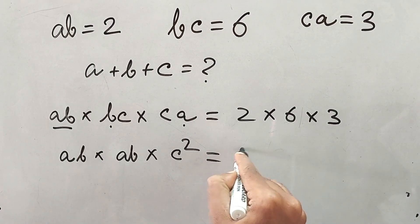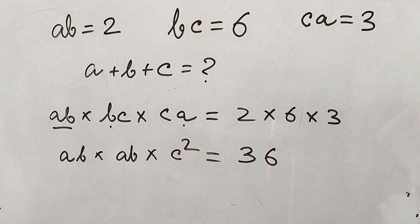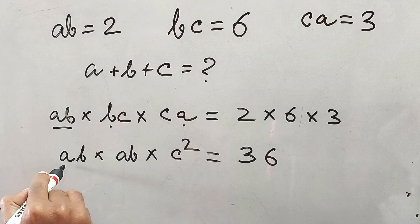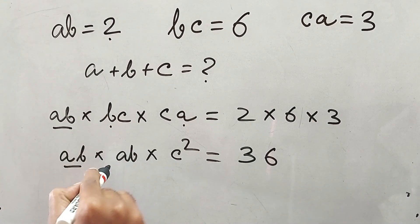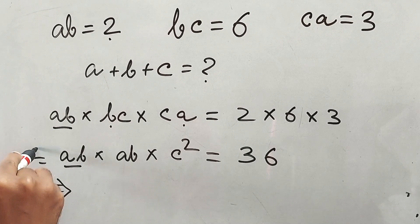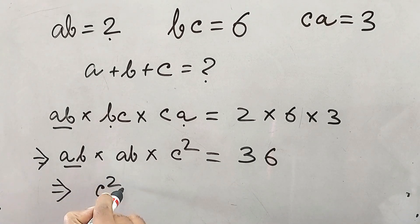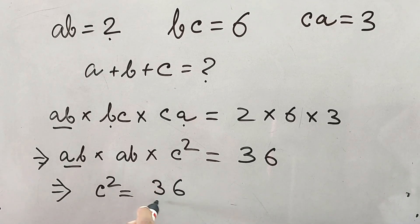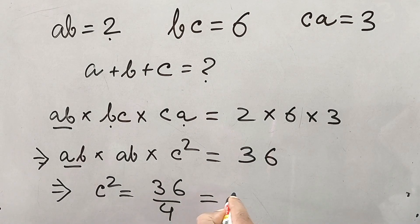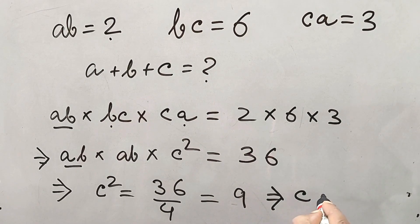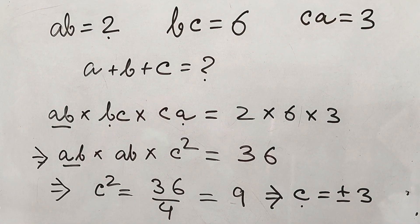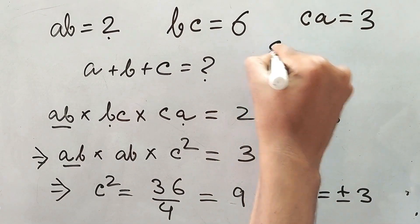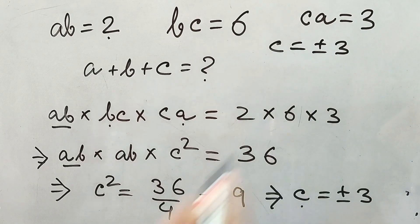This product is equal to 36. Now, what is the value of AB? AB is 2, so AB squared is 4. This 4 goes to the other side. Therefore, C squared is equal to 36 divided by 4, which is 9. This implies C is equal to plus or minus 3.